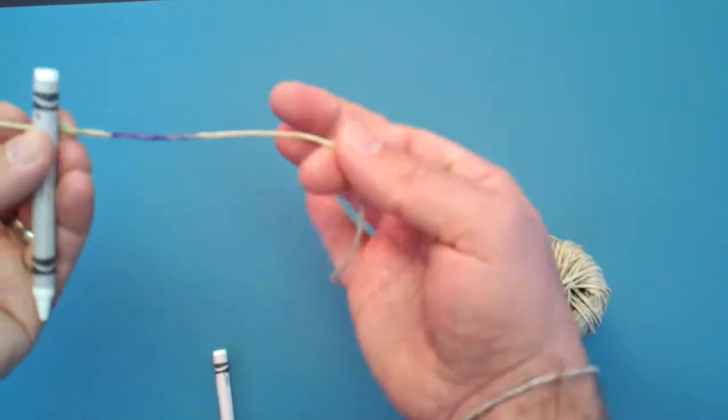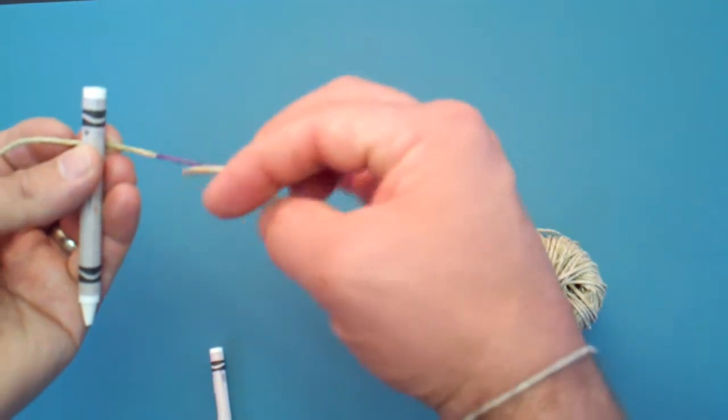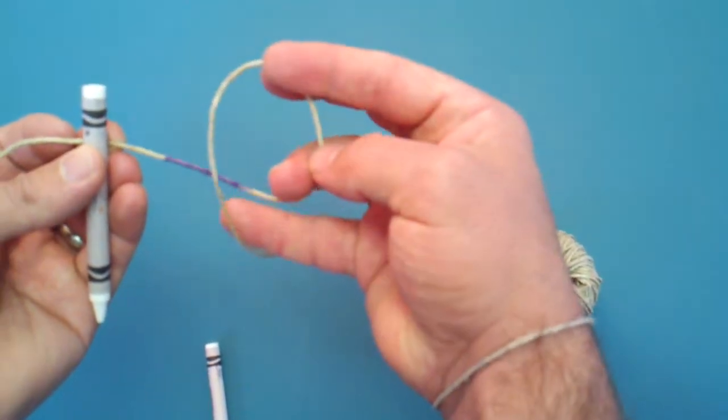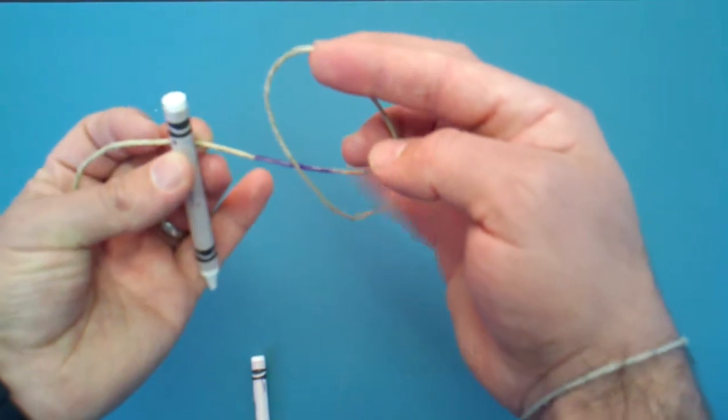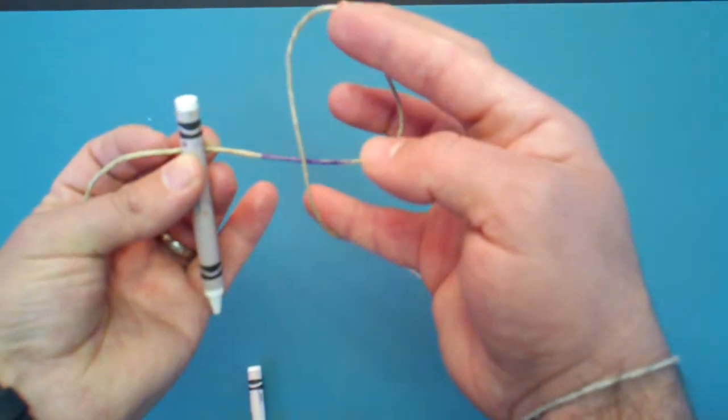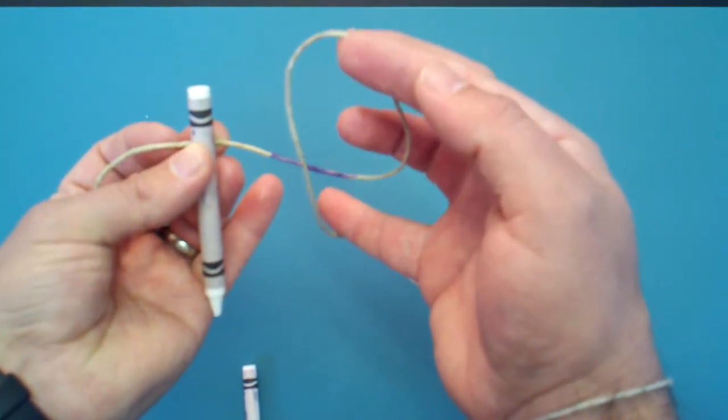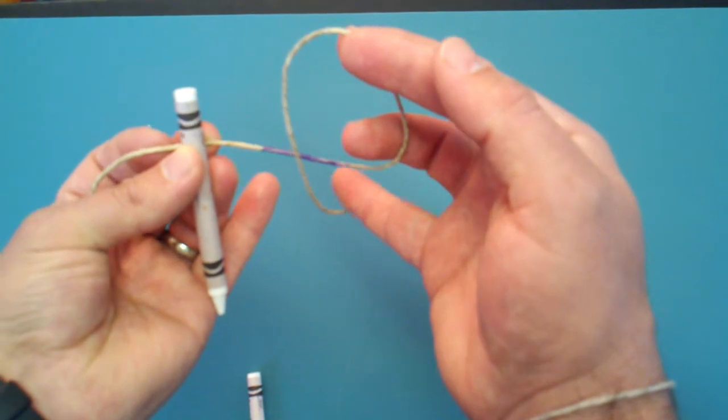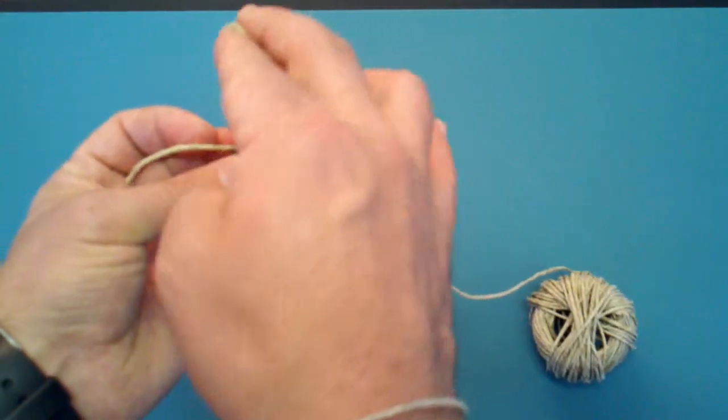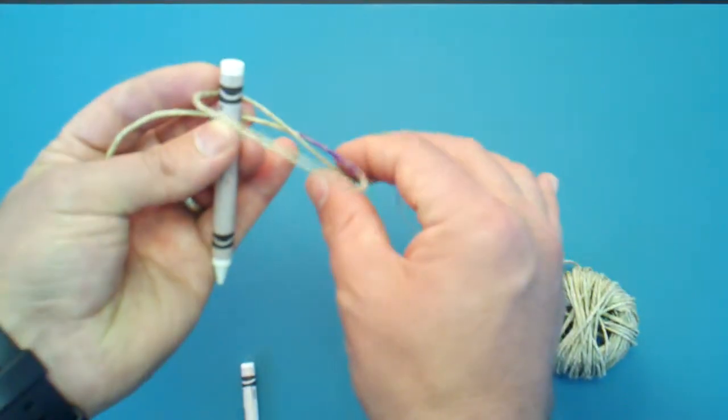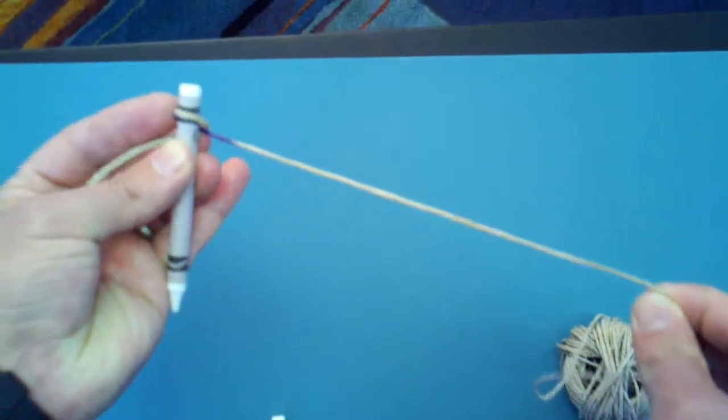And now, over here on this side, you're going to make a loop so that it drops down in front of you. So this vertical string is going to be closer to you than the horizontal one. Hopefully that's easy to see with the purple which one is on top. And then this just loops right over the top, and you pull it tight.